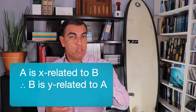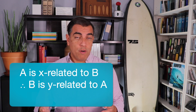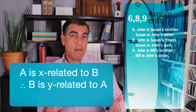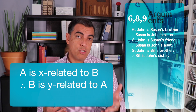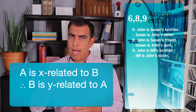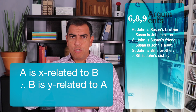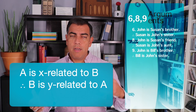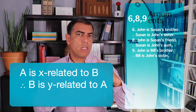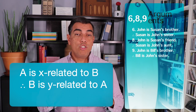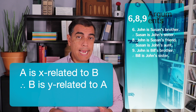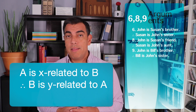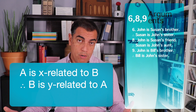We know this because we could substitute other things in for those terms and get counterexamples where the premise is true but the conclusion false. For example, argument eight: John is Susan's friend, therefore Susan is John's aunt. Notice I substituted two different kinds of relations, and all of a sudden the premise is true but the conclusion could be false. So it can't be the structure itself that guarantees this argument is Necessary Truth Preserving.